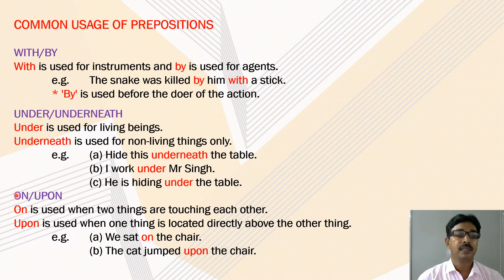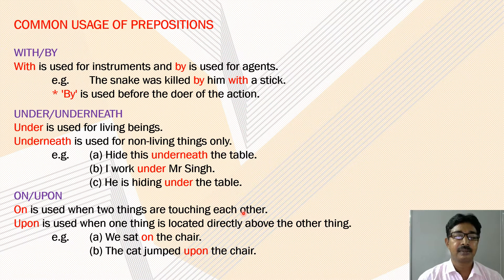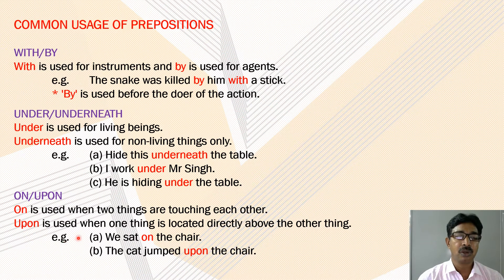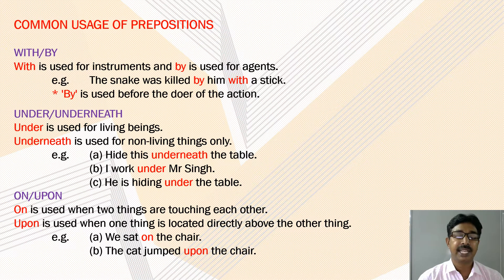The prepositions 'on' and 'upon': 'on' is used when two things are touching each other. For example: we sat on the chair. 'Upon' is used when one thing is located directly above the other. For example: the cat jumped upon the chair.